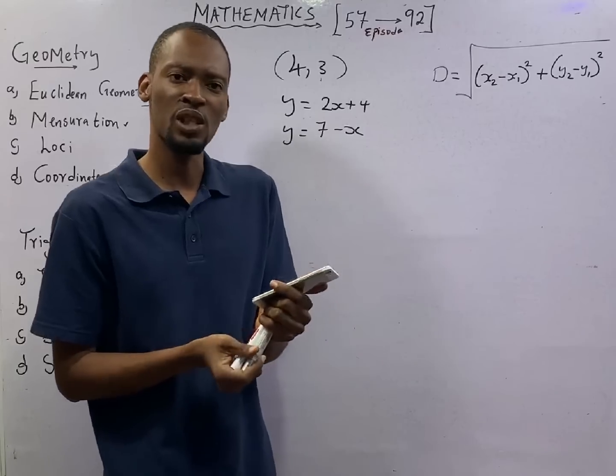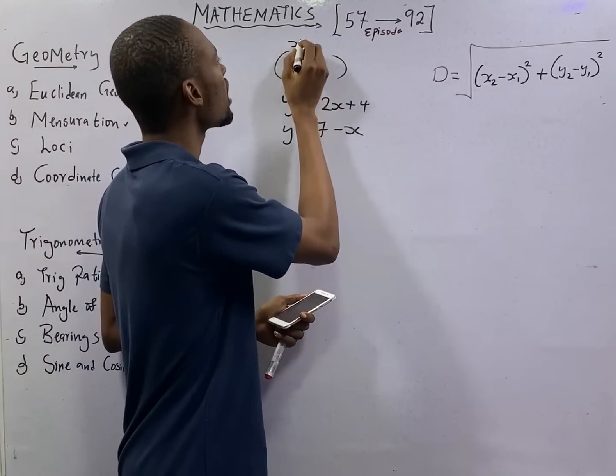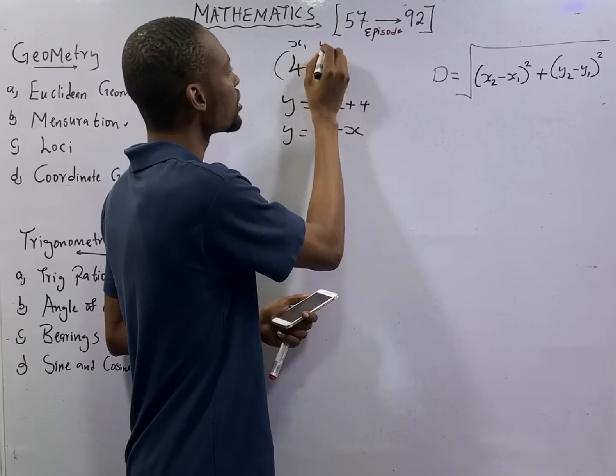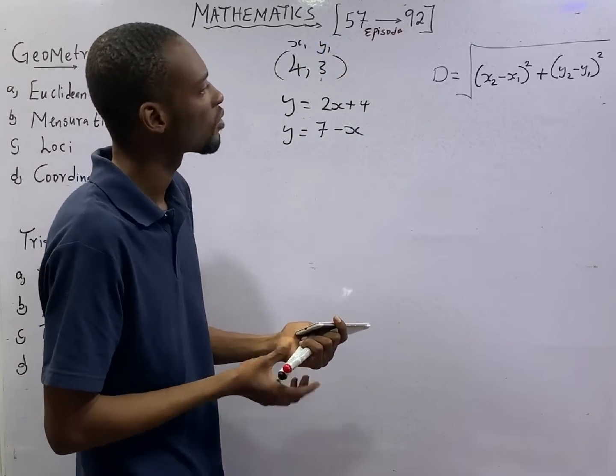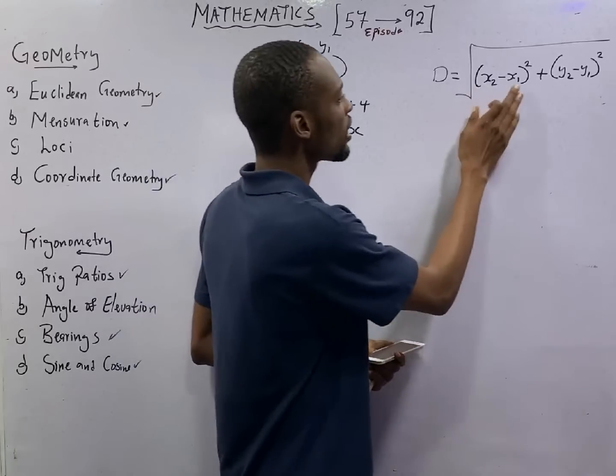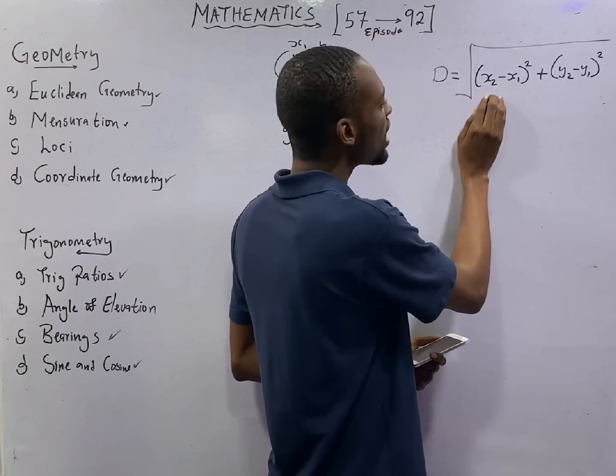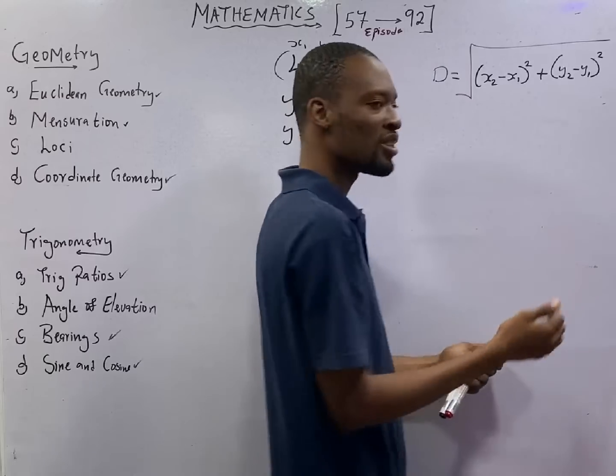From the data that we are given, this is obviously our x1, this is our y1. We have x1, we have y1, but we do not have x2 and we do not have y2.